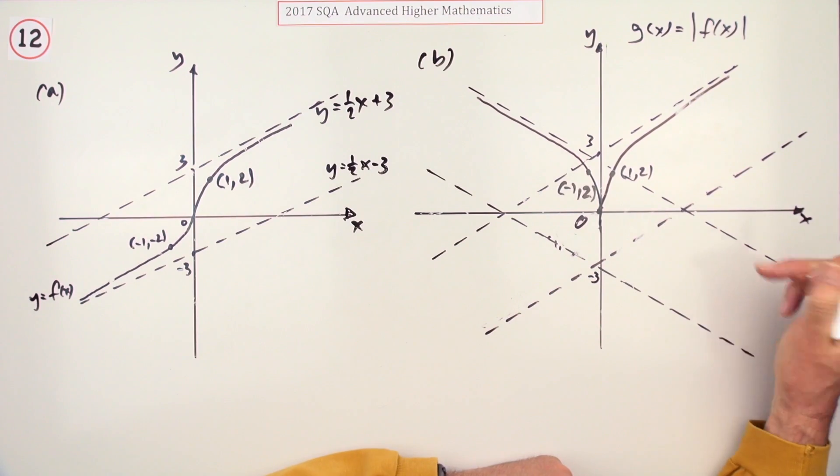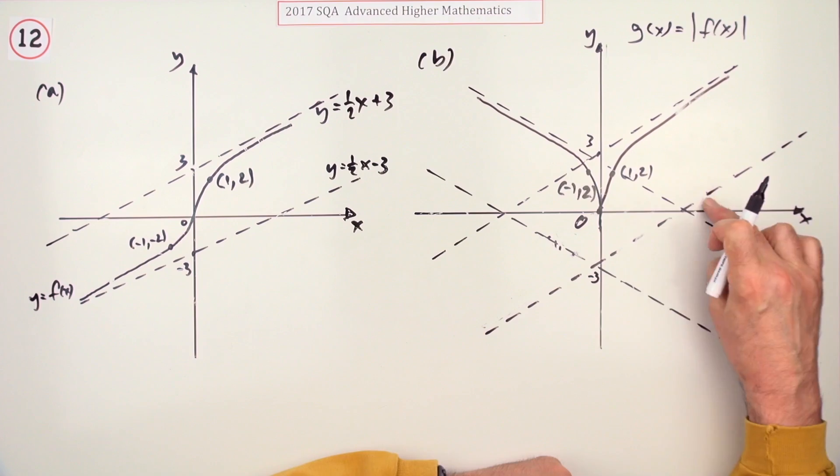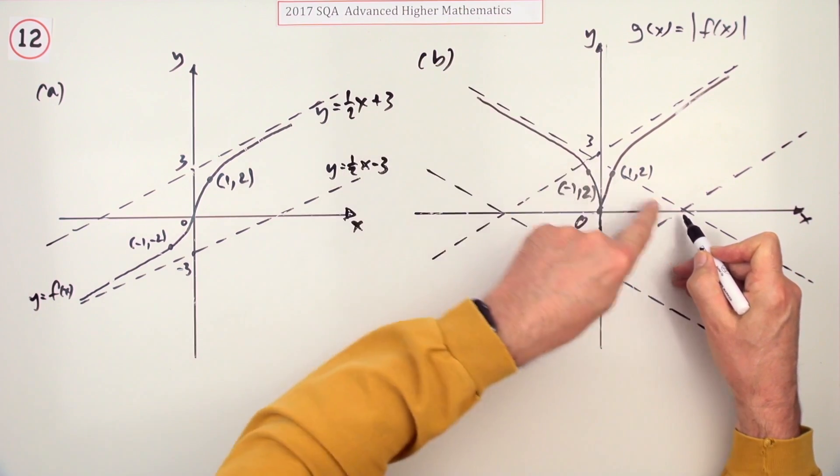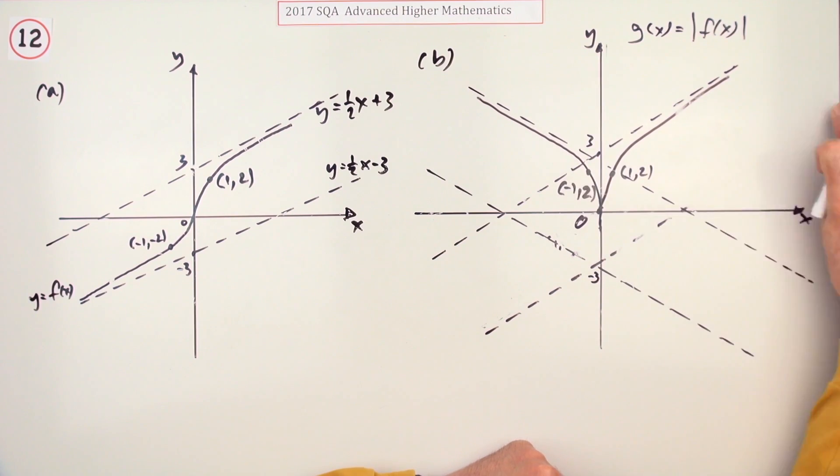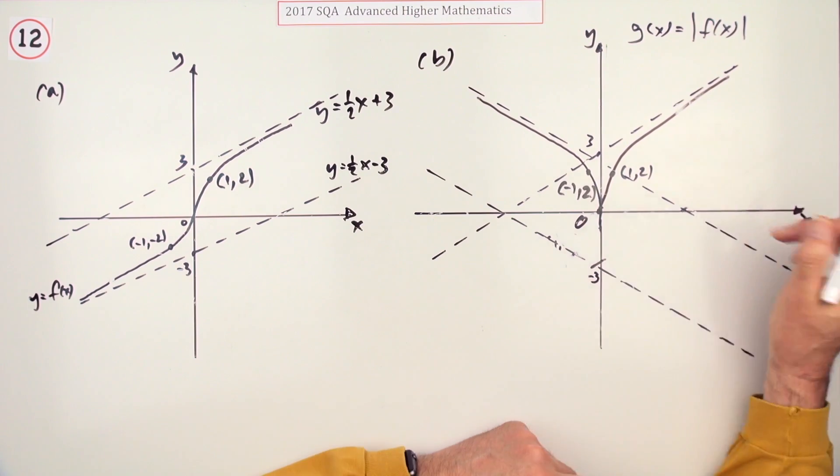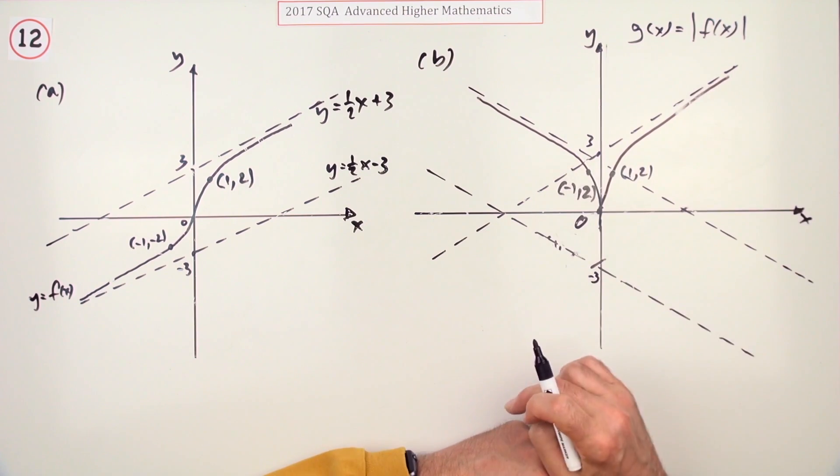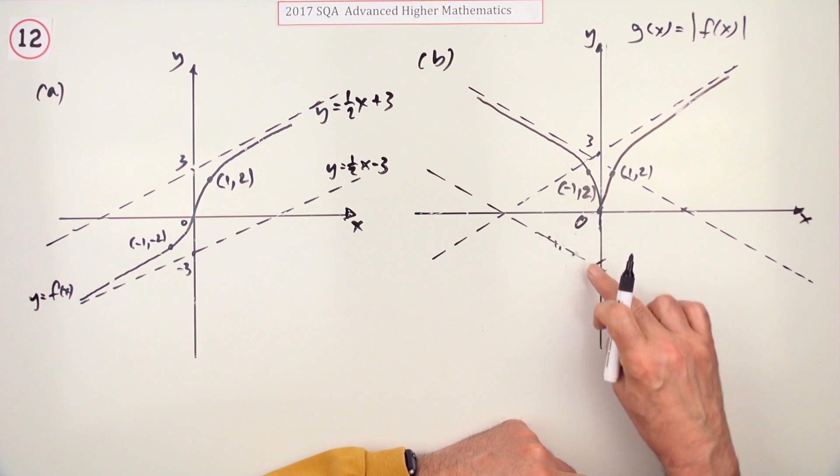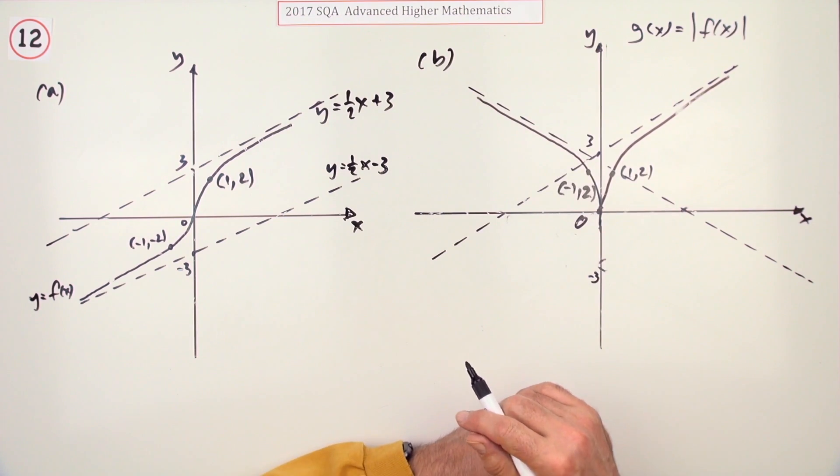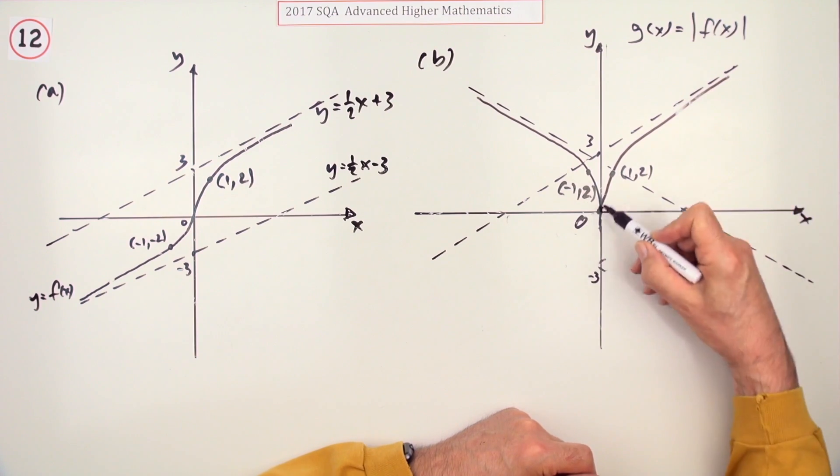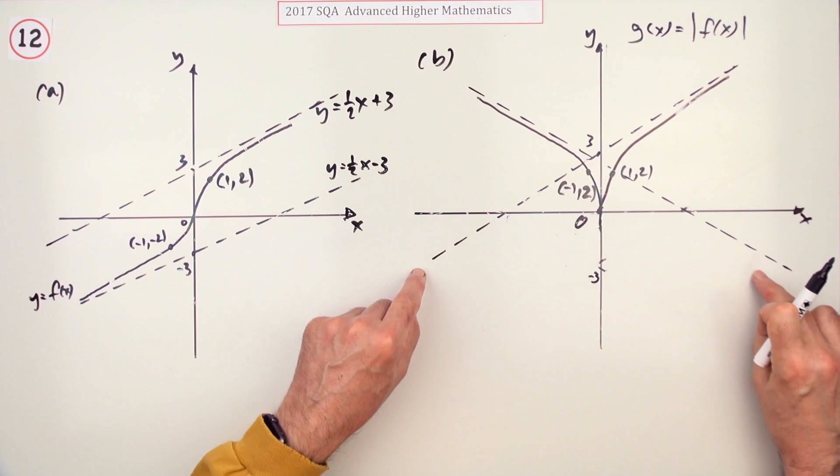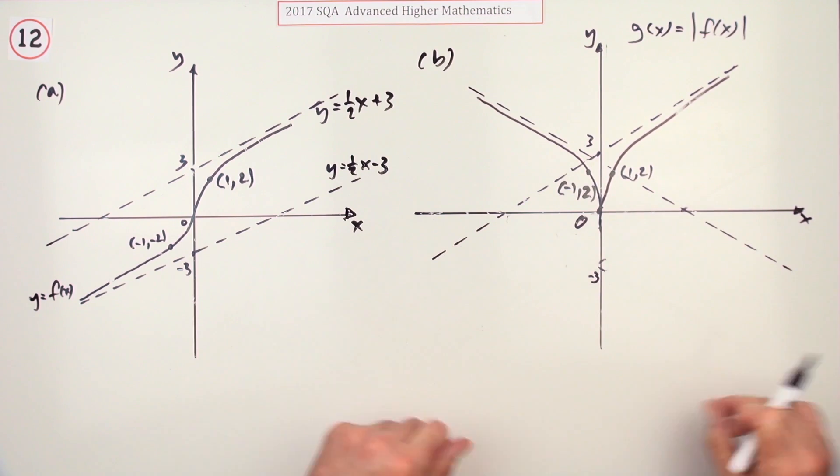But what are the asymptotes now? This line here, even though it bounced off the axis and carried on being asymptote there, they've got different equations, so that's no longer an asymptote. This line is still an asymptote, and this one again isn't doing anything anymore. The asymptotes are the lines, the bounding lines that the curve tends towards, so these are the two.